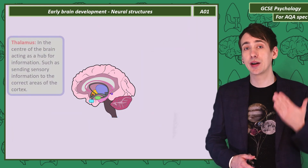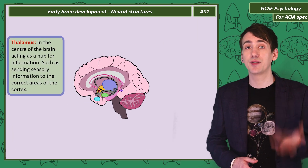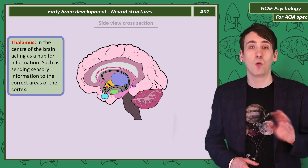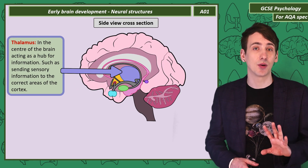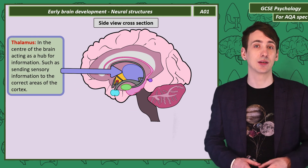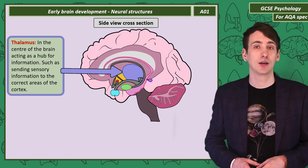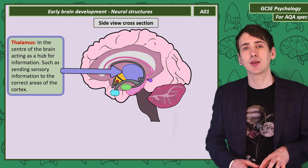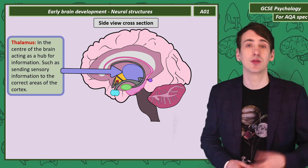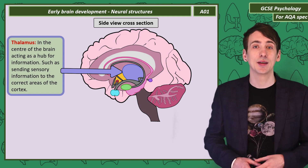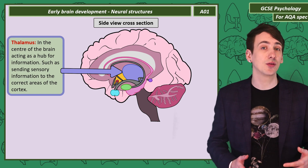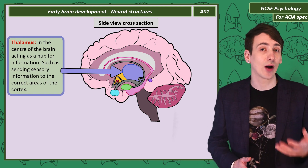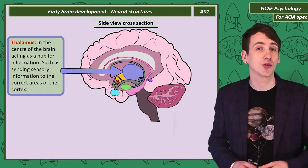If we cut the brain in half we can see the thalamus — one on each side of the brain, in the centre. The thalamus acts as a hub of information, sending sensory information to the correct areas of the cortex.